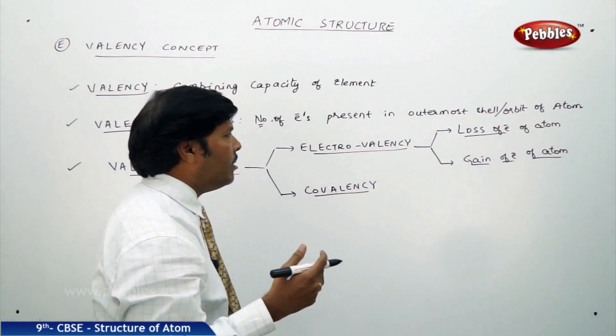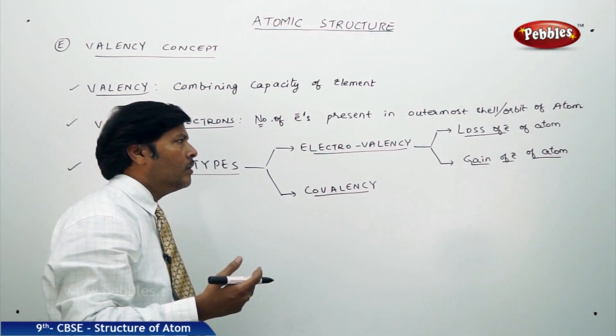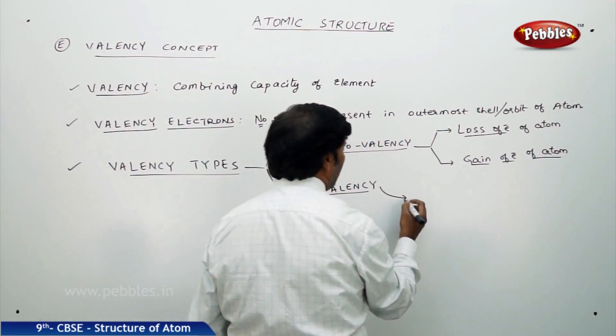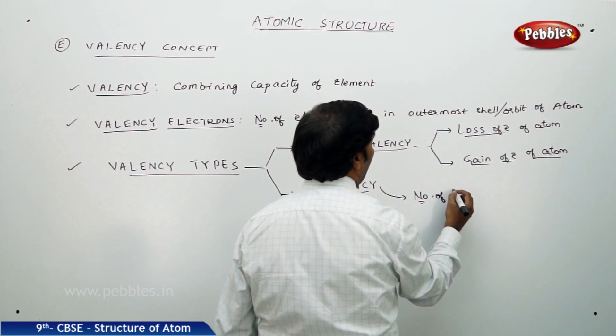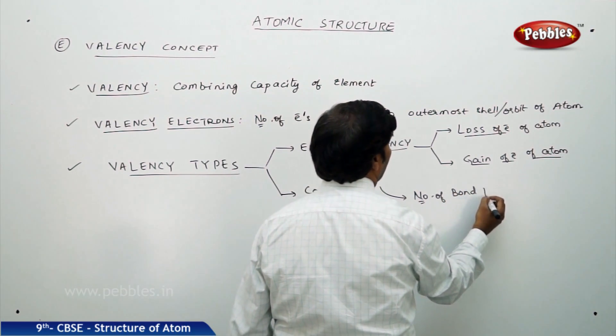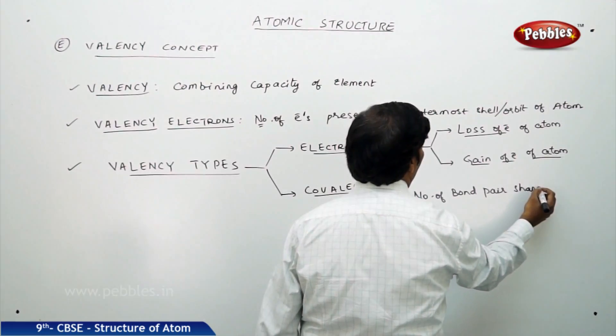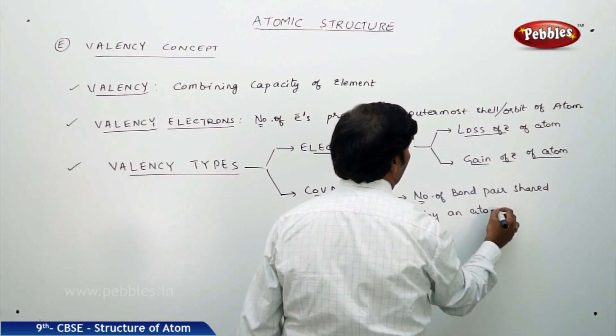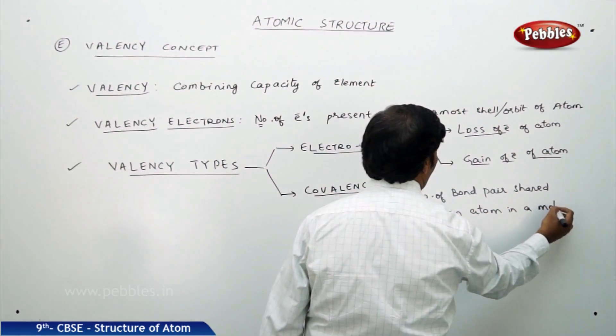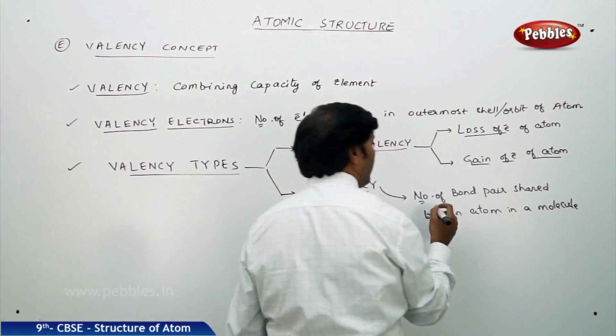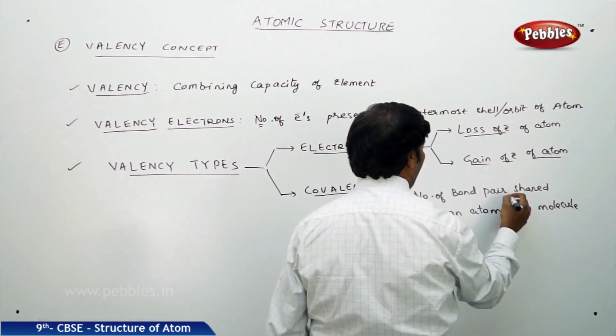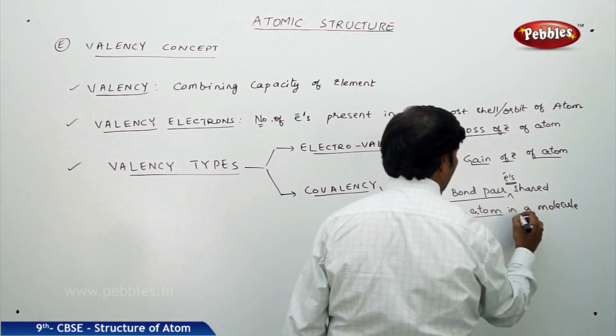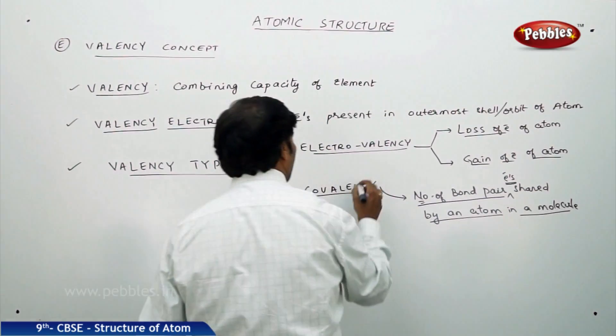The valency which is obtained by species either because of the loss of electron of an atom or sometimes gain of electron of an atom. If you go for covalency, the valency is nothing but number of bond pair electrons shared by an atom in a molecule.